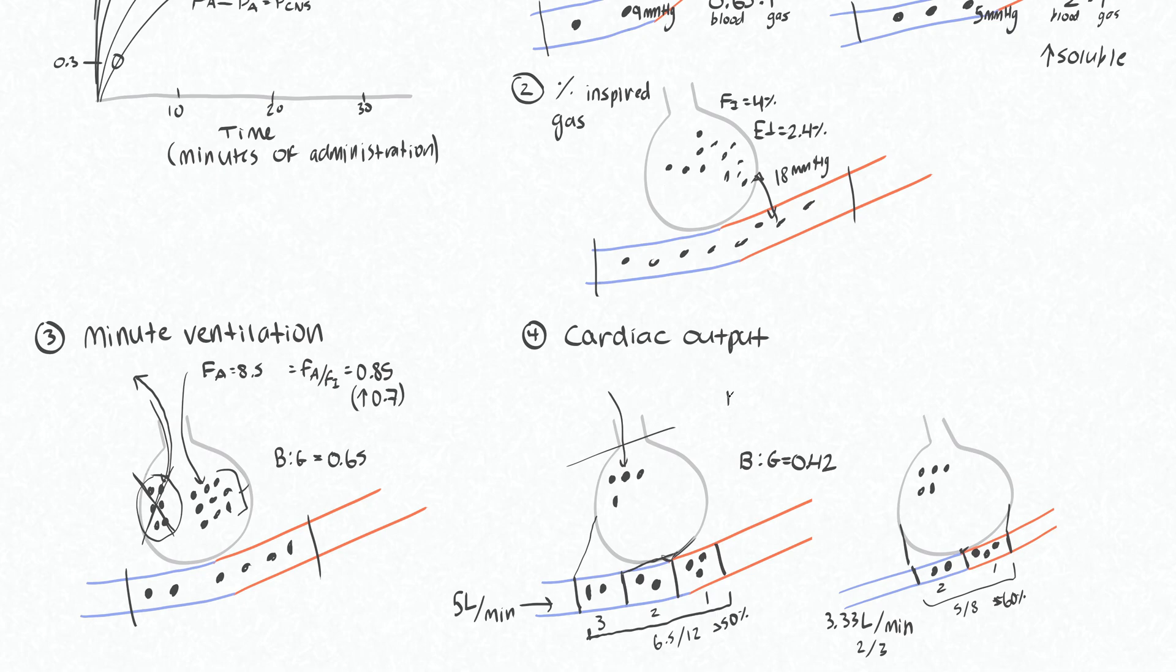For desflurane, the MAC is about 6.2%, which corresponds to a partial pressure of 47 mmHg. So we're saying if we want that for that full one MAC, we need our CNS partial pressure to be 47, or the partial pressure of the blood being delivered to the CNS to be 47. Unfortunately, in both of these cases, our partial pressure is going to be less than that.